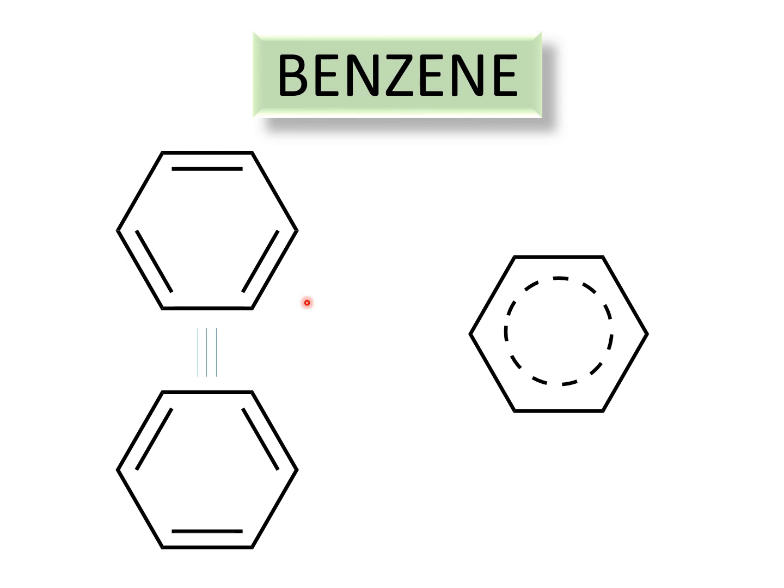As discussed in another video where we covered how to draw molecular orbitals using 1,3-butadiene as an example, when atomic orbitals combine together to form molecular orbitals, the number of molecular orbitals formed is equal to the number of atomic orbitals that combined. So we have six p orbitals combining together due to delocalization to form six molecular orbitals.